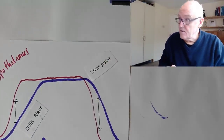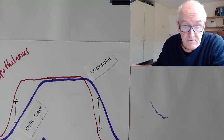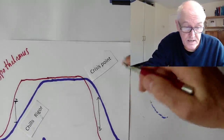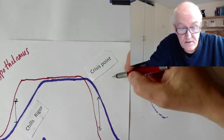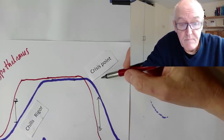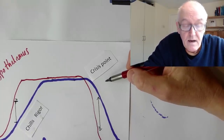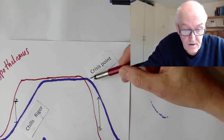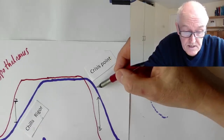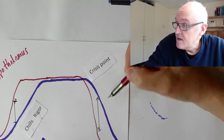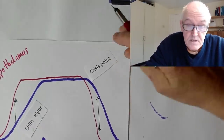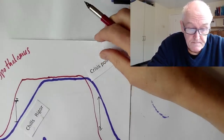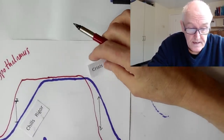In the old days where people used to get a lot of bacterial infections, the family would sit around the bed waiting for the crisis point. And if it didn't happen, the patient may die. But if the crisis point happened and the fever started to go down, they knew the loved one was likely to get better. That's the crisis point.